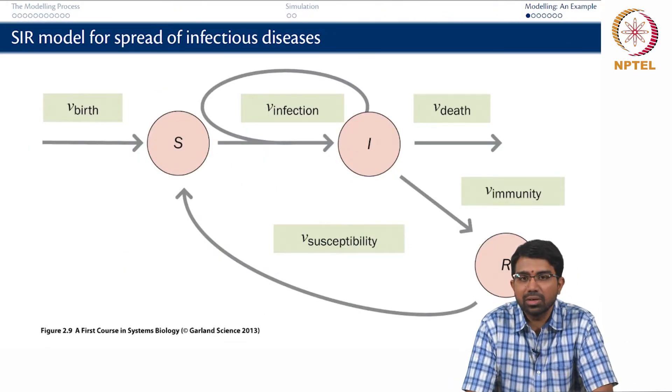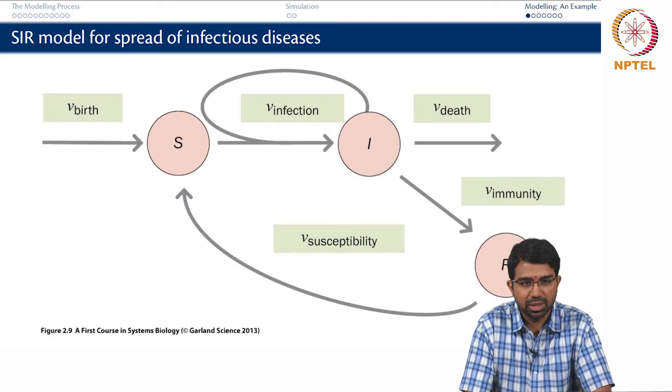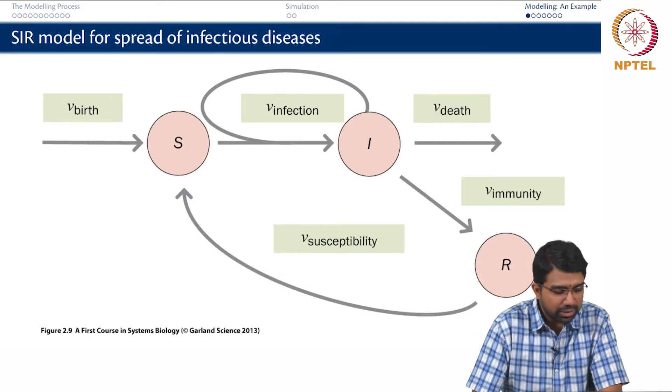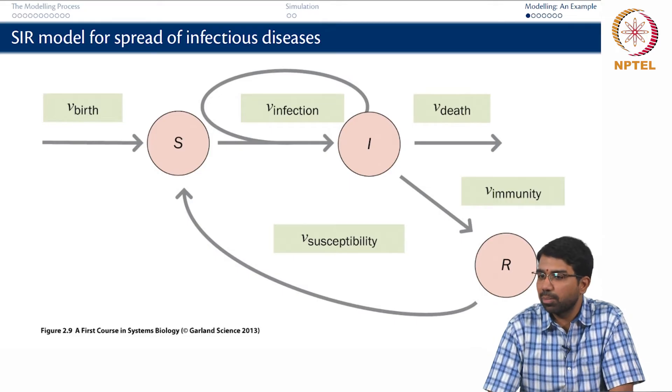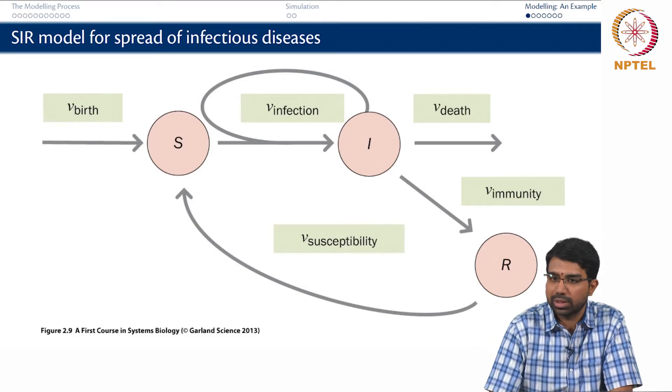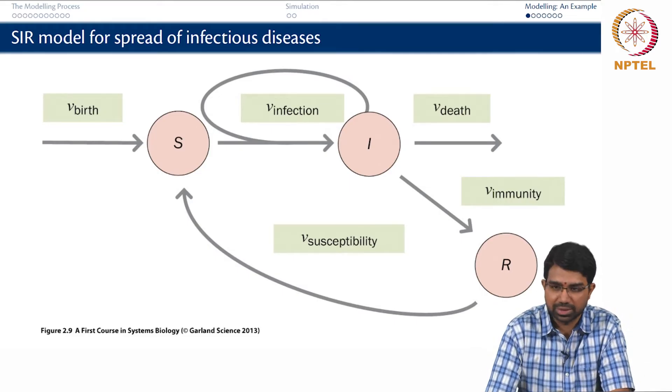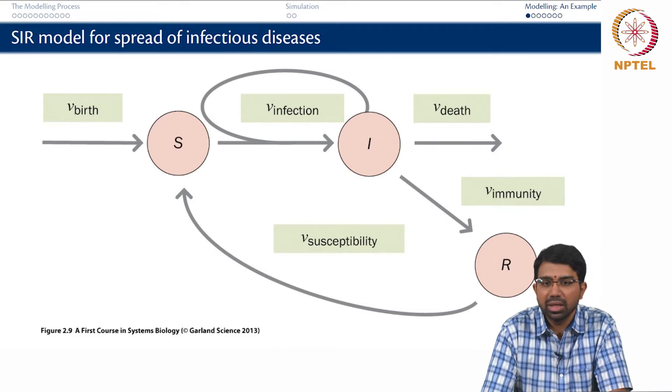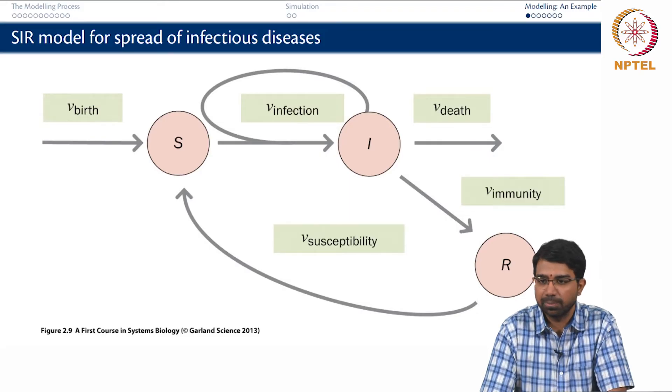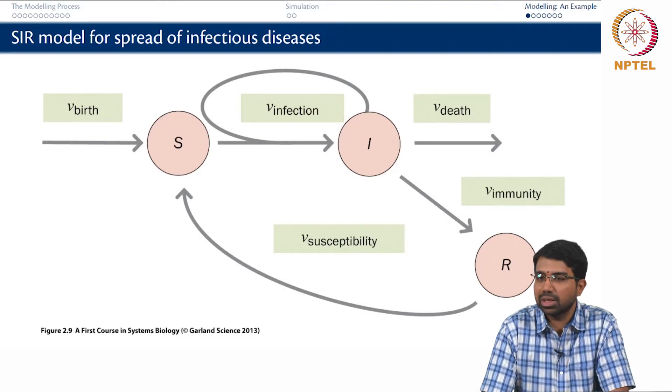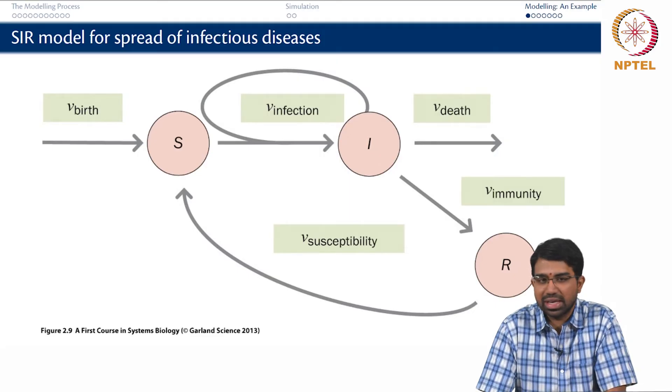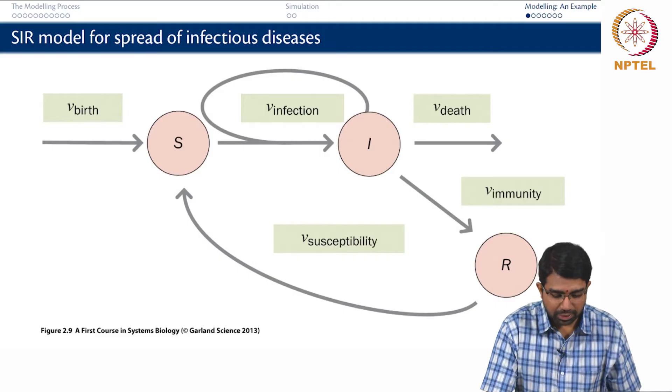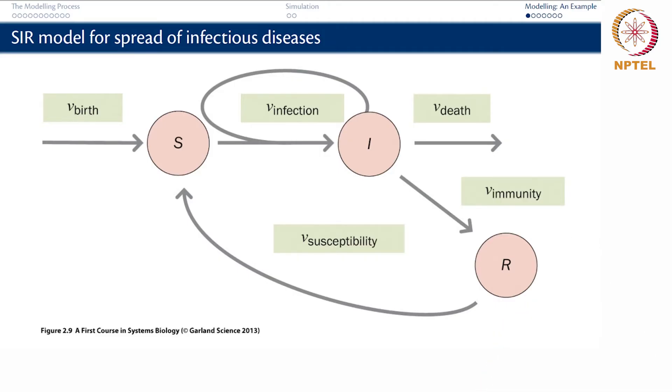So this is the model for spread of infectious diseases. As we said earlier, there are three kinds of subpopulations you want to worry about. What fraction of people are susceptible? What fraction of people are infected? And what fraction of people are recovering from a disease? We typically write this out as SIR, so it is called the SIR model of infectious diseases. Given this, let us just step aside.